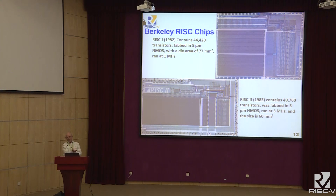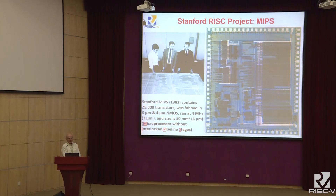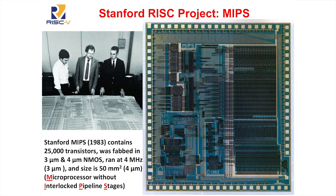I told that naming story to Krste Asanović, Andrew Waterman, and Yunsup Lee, who were building the next Berkeley RISC design, and they said: great, we'll call this RISC-5. It's the fifth Berkeley one — with a 30-year gap, but part of that continuum. Besides the Berkeley work, John Hennessy at Stanford built the MIPS microprocessor — MIPS stands for Microprocessor without Interlocked Pipeline Stages. Stanford started a company with the same name; MIPS processors still ship around 750 million units per year.